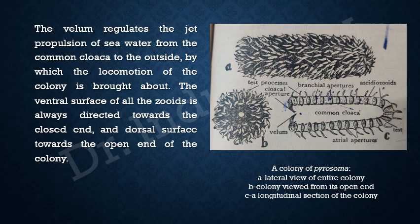The ventral surface of all the zooids is always directed towards the closed end of the colony, and the dorsal surface is directed towards the open end — the surface facing the cloacal aperture where the velum is present is the dorsal surface, and the surface facing the closed end is the ventral surface.